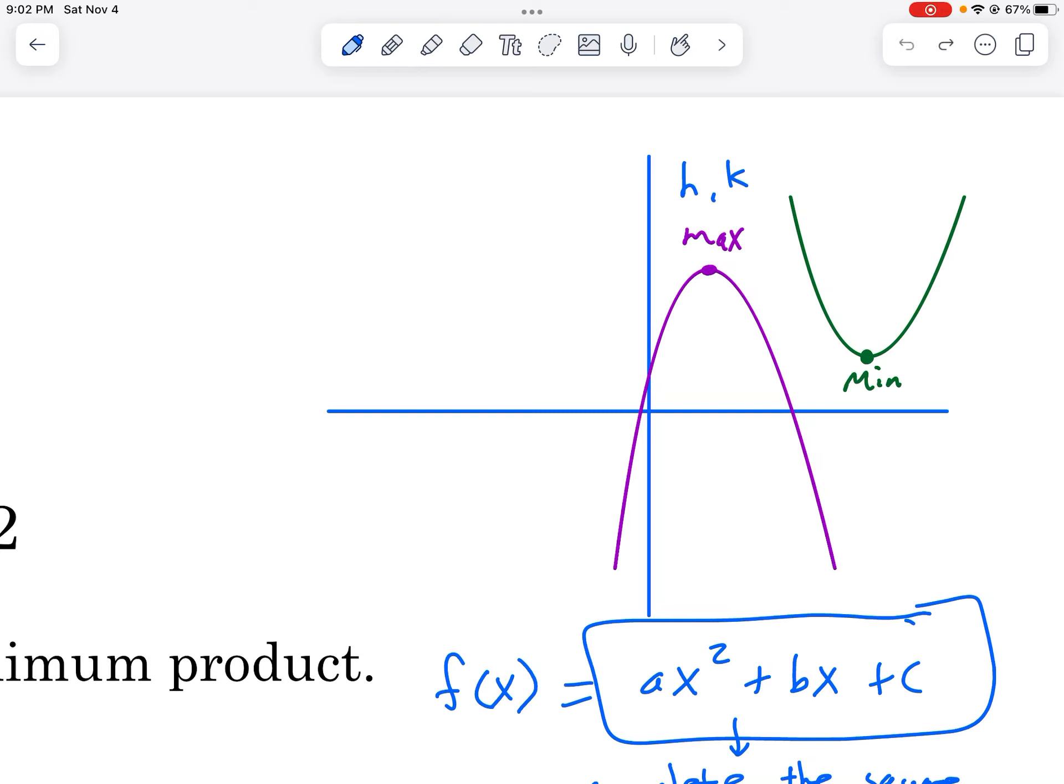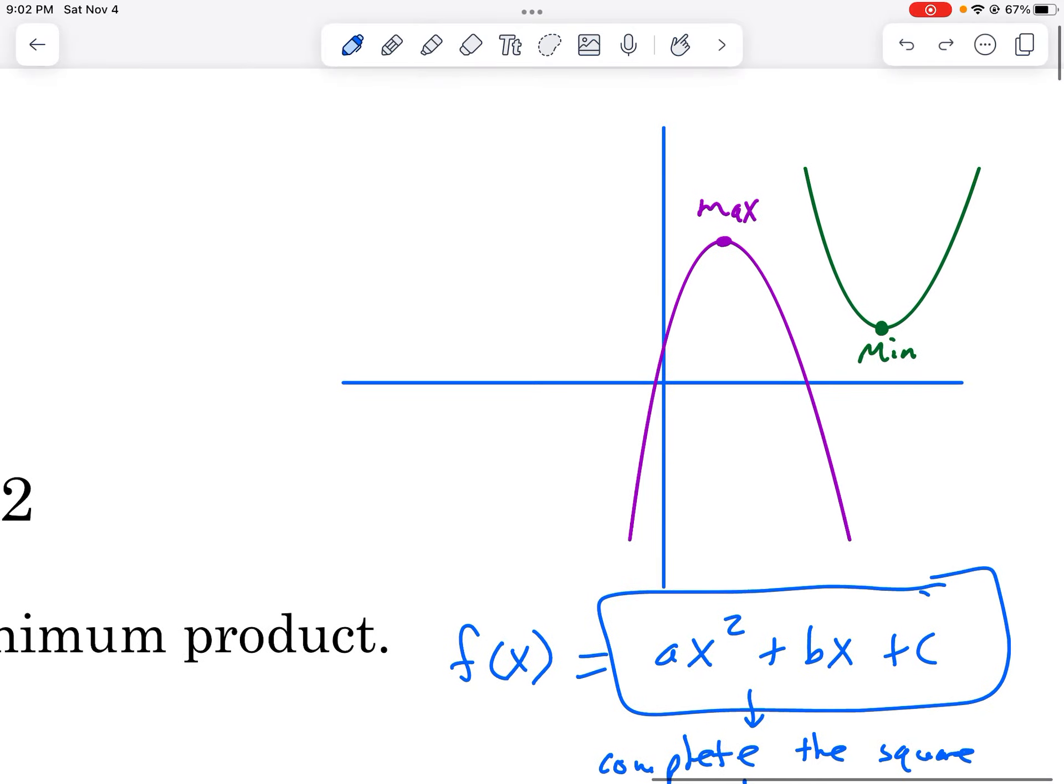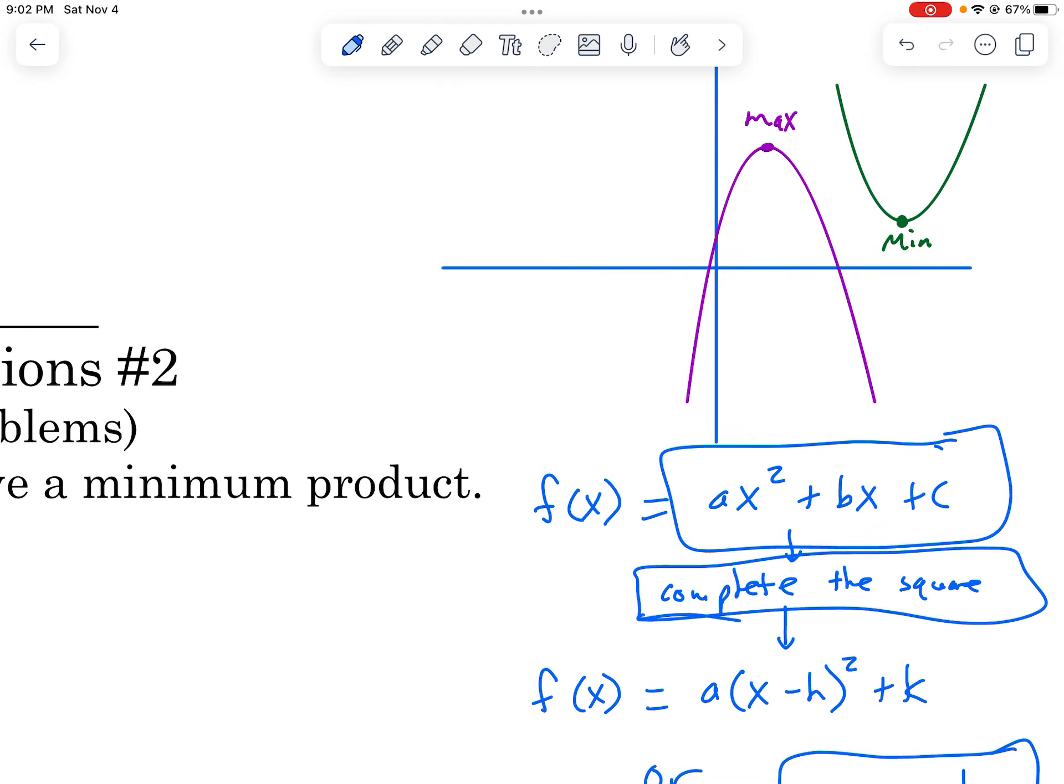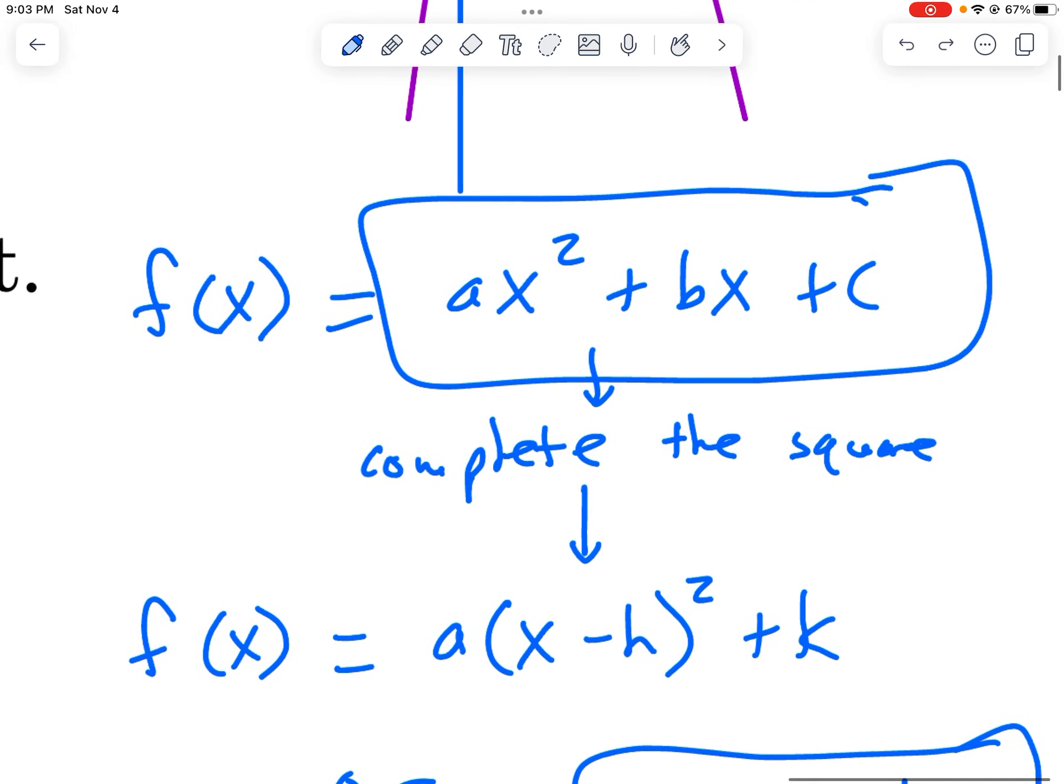And then you can get your answer solving the problem, whether you need the h value or the k value, whatever it is, which is kind of a process. You see how there's this thing in the middle called completing the square? It takes several steps to solve it that way, which you can do. You can go ahead and do that. It's fine. You can get the vertex that way. But there's this handy thing.